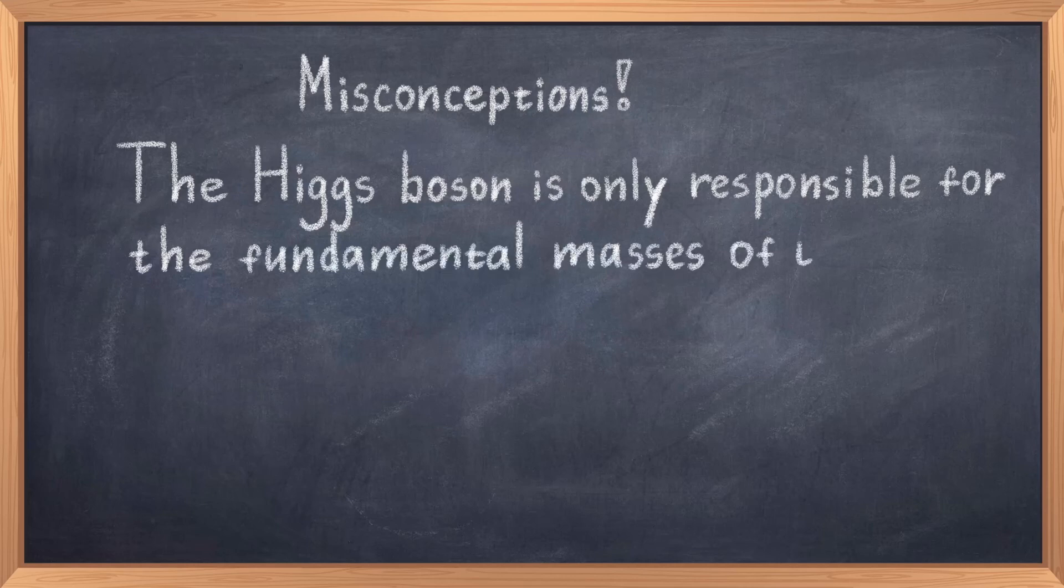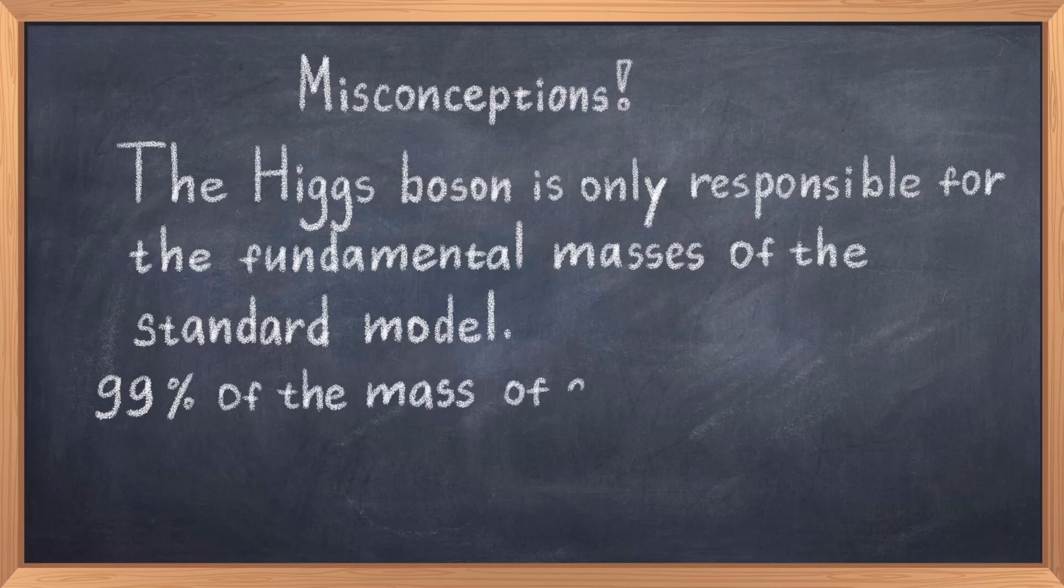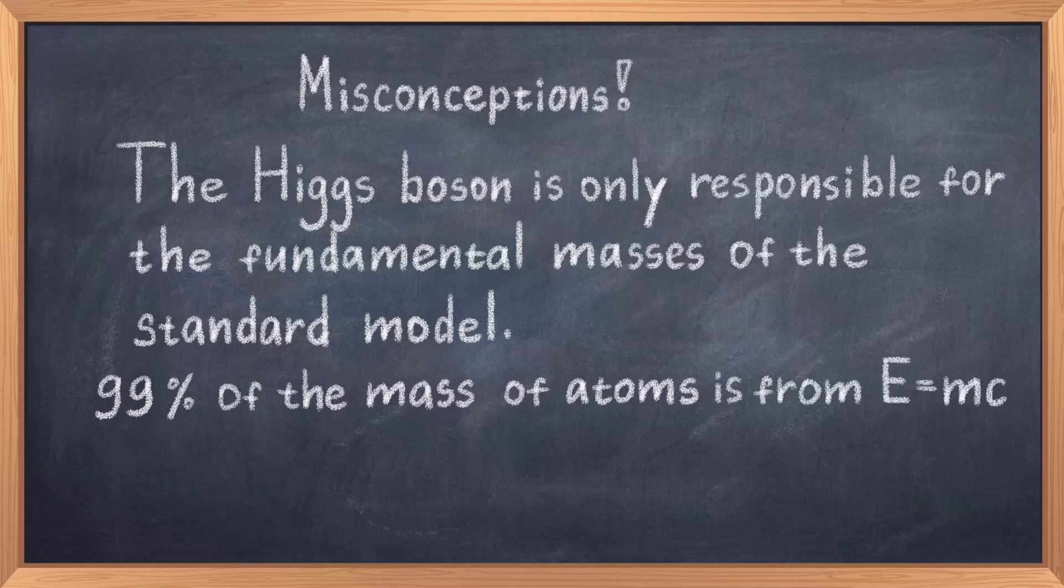but if you look at the mass of a proton, which is in the nucleus of an atom, and compare the proton mass to the mass of the constituent particles, thus two up quarks and a down quark, then you see that the quarks only make up around one percent of the proton mass, thus almost all of the mass of an atom does not come from the fundamental particles,